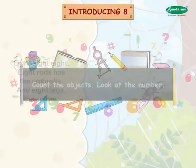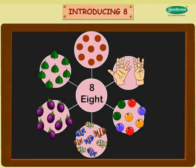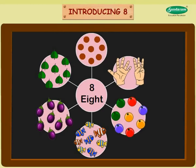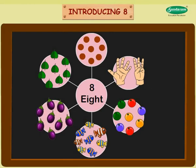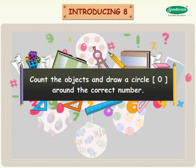Count the objects. Look at the number. Eight dots. Eight fingers. Eight beads. Eight fishes. Eight brinjals. Count the objects and draw a circle O around the correct number.